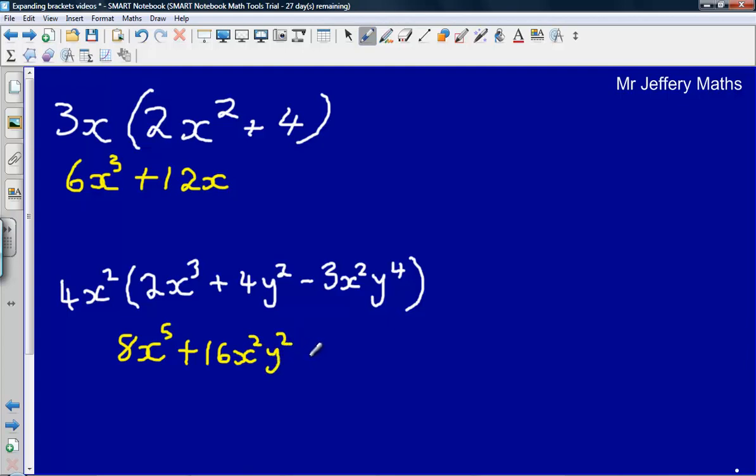And then lastly, I've got 4x squared multiplied by minus 3x squared y to the power of 4. So here I'll end up with minus 12, 4 times minus 3 gives us minus 12. Then x squared multiplied by x squared gives me x to the power of 4. And then lastly, I've just got that y to the power of 4 on the end.